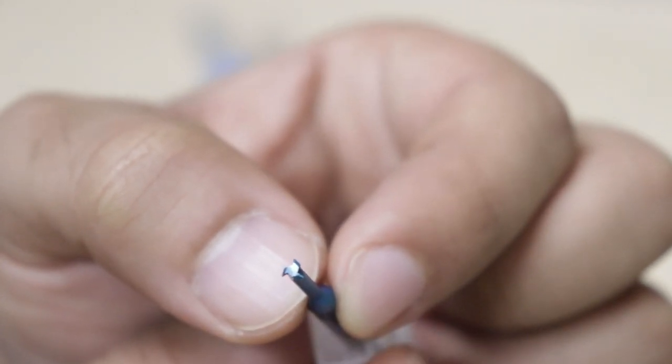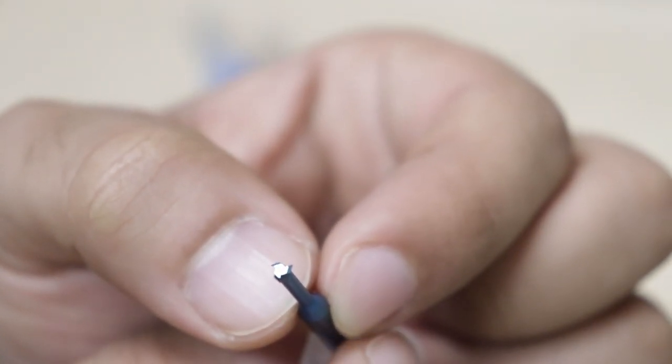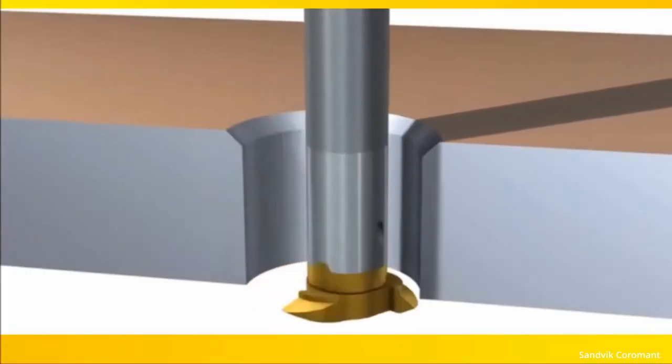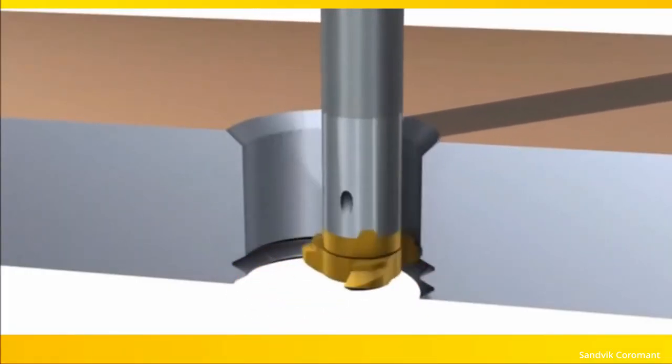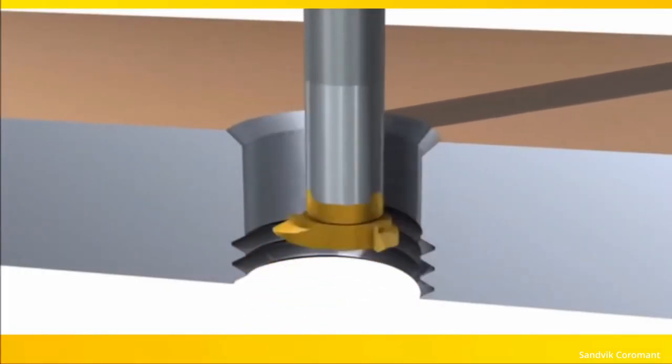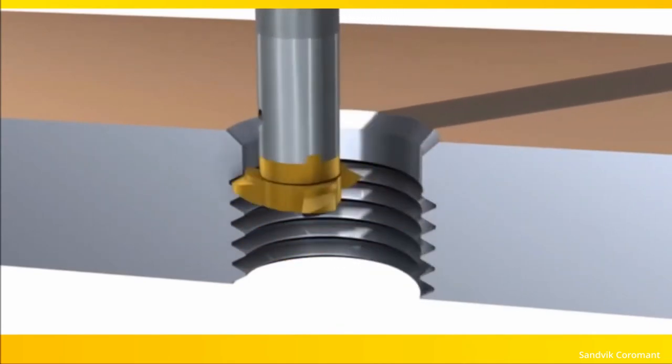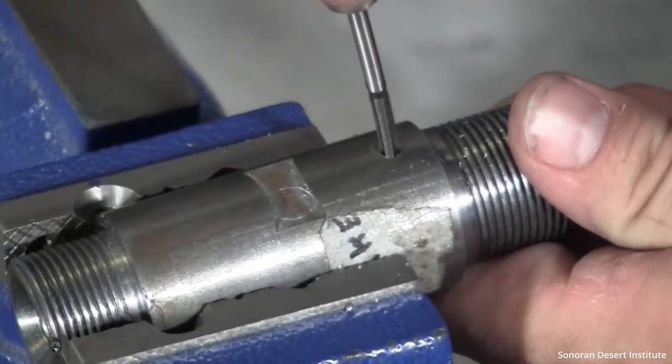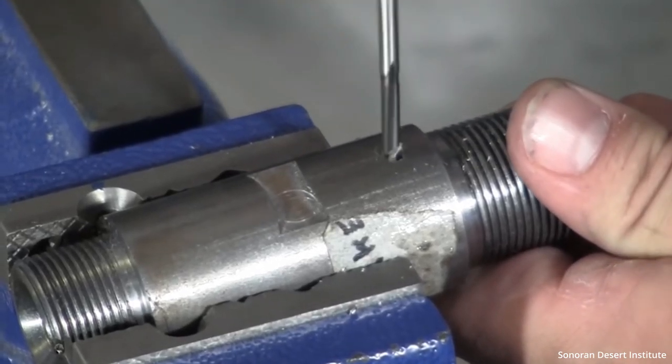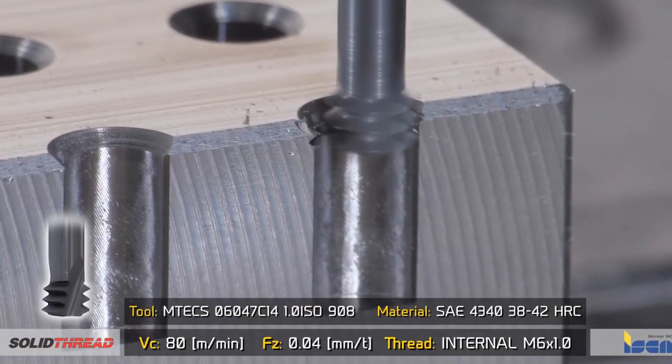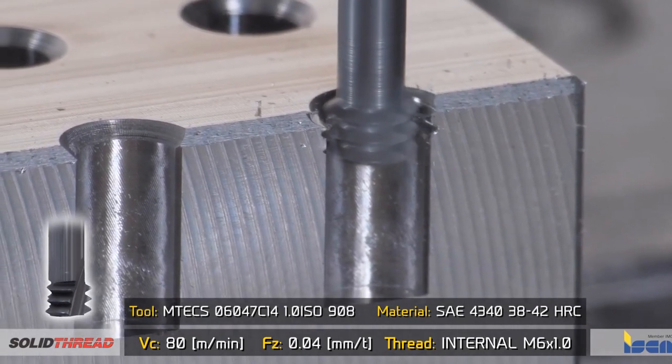One other tool some of you may choose to use is a thread mill. This is an endmill that goes into a pre-made hole and cuts threads for a screw to screw into. Obviously you can do this with a manual tap by hand, but doing it on a CNC ensures no human errors and sometimes is a safer bet if you don't want to risk a broken tap in an expensive part. These tools are a little bit pricey, but if you know you need it, it's worth it.